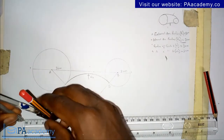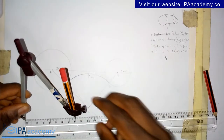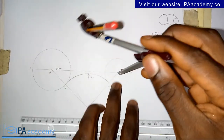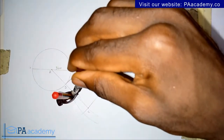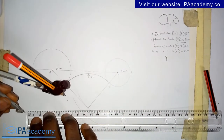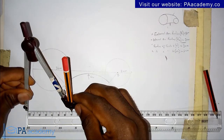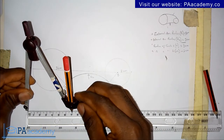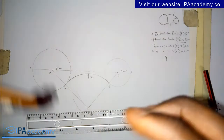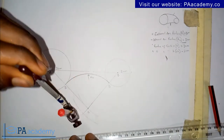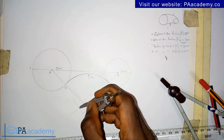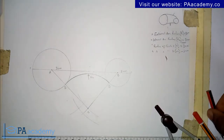We measure 8 cm and place the compass at point B to draw an arc. Then we measure 7 cm, place it at point A, and draw another arc to intersect the first one. We note their point of intersection and call it point F.